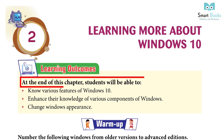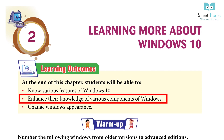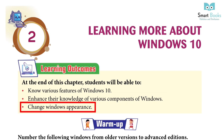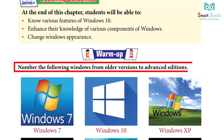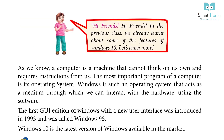Outcomes: At the end of this chapter, students will be able to know various features of Windows 10, enhance their knowledge of various components of Windows, and change Windows appearance. Warm Up: Number the following windows from older version to advanced editions. Teacher's Note: assist students in arranging the editions of Windows in chronological order, and apprise students that continuous research and increased technology usage has led to the advanced edition of Windows by Microsoft. Hi friends! In the previous class, we already learnt about some of the features of Windows 10. Let's learn more!